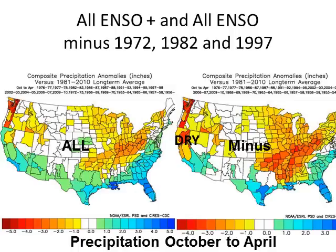When we look at all El Niños — weak, moderate, and strong — and then remove some of the big strong El Niños, we see that Northern California is actually very dry. So the key emphasis is that El Niño does not have much relationship with precipitation across Northern California, but it does for Southern California.